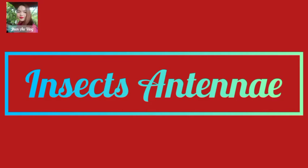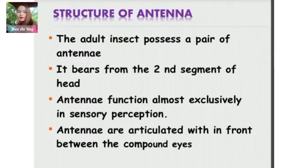Our topic for today is about insect's antennae. What are the structures of antenna? The adult insect possesses a pair of antennae. It bears from the second segment of the head. Antennae function almost exclusively in sensory perception, and antennae are articulated within the front between the compound eyes.